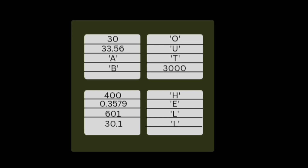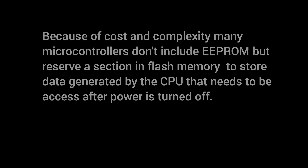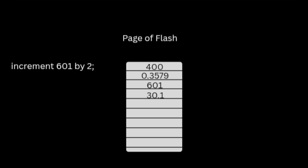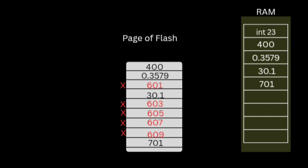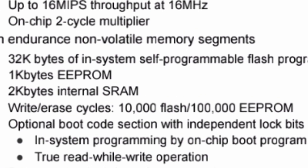Because of cost and complexity, many microcontrollers don't include EEPROM. Instead, they reserve a section of Flash memory to store data generated by the CPU that needs to be accessed after power is turned off. A special routine is used to make sure important data isn't erased. When we want to change a value at a location, we can't just overwrite it; instead, the new value is written to a new location and the old value is marked invalid. Over time, both junk and valid data build up in this Flash section. When it gets full, the valid data is copied into RAM, the entire page is erased, and then the valid data is written back. This is necessary because Flash has a limited number of read and write cycles.